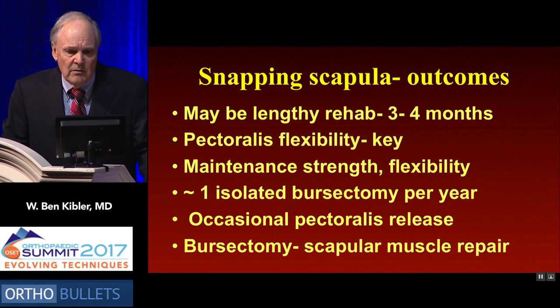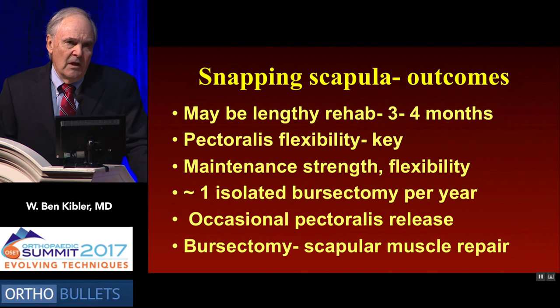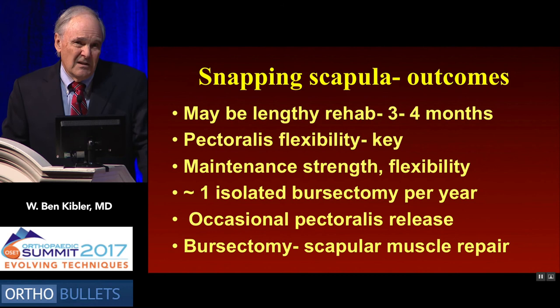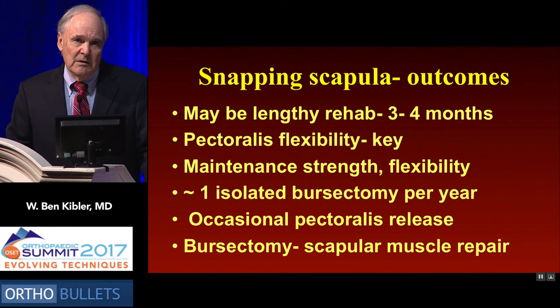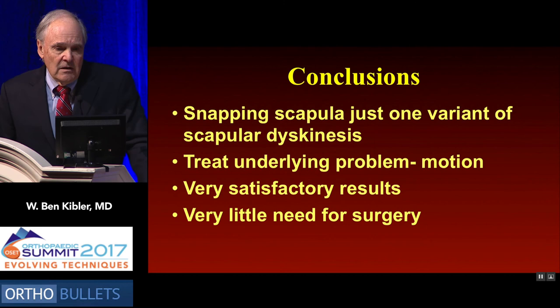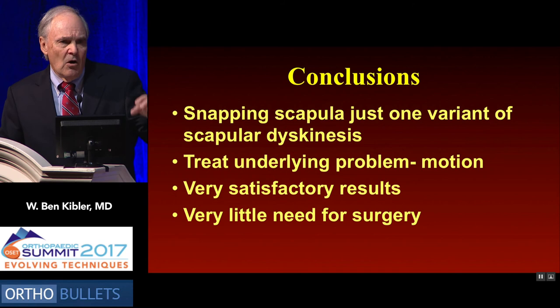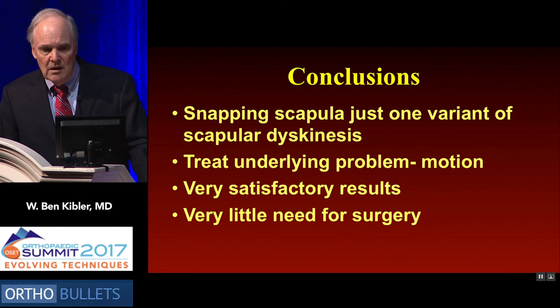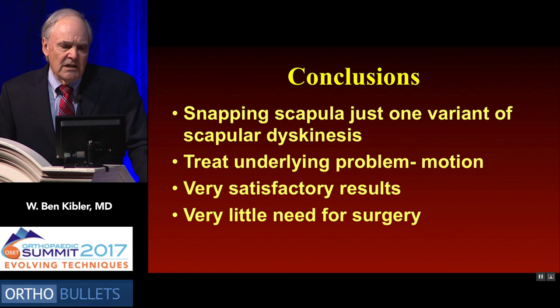Using this protocol at our scapular center, we do only about one isolated bursectomy a year, and we actually perform as many pectoralis releases as bursectomies — we just haven't found the need for more surgery. Often, bursectomy has been done in cases that actually had scapular muscle detachment, which makes that repair harder due to scar tissue. So if you have snapping scapula, rule out all those other things before doing a bursectomy. Snapping scapula is one variant on the scapular dyskinesis spectrum, and you must treat the underlying problem — the altered motion — by identifying its causes. Using this protocol of addressing the motion, we get very satisfactory results with very little need for surgery.